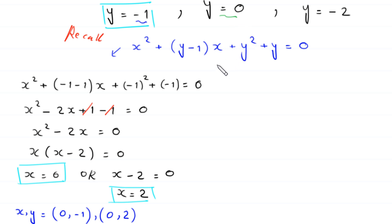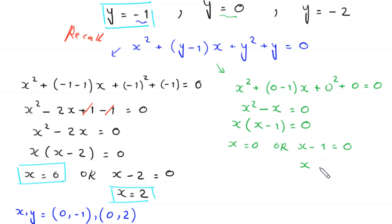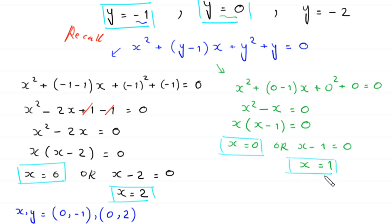When y equals 0, the equation becomes x squared minus x equals 0. Factoring: x times x minus 1 equals 0, giving x equals 0 or x equals 1. So from y equals 0, we get the pairs 0, 0 and 1, 0.